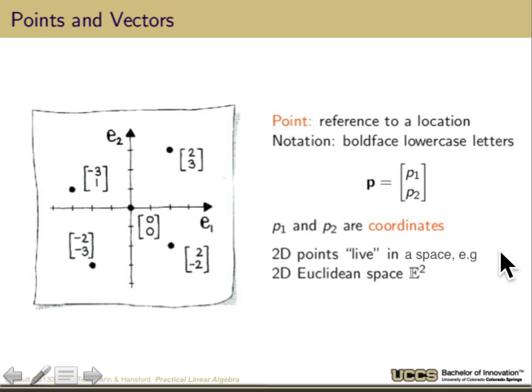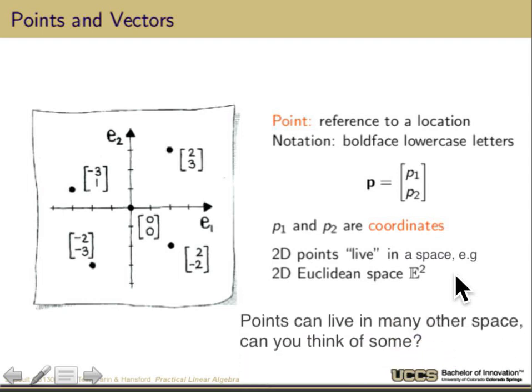2D points live in a space. For example, the 2D Euclidean space, represented as E2, is a place in which points can live. Points can live in lots of different spaces — can you think of some discrete spaces that are not continuous? Can you think of points in spaces that aren't even really numbers? We'll see how we can deal with some of those throughout this semester, but for today's lecture we're going to keep points in Euclidean space E2 just to make things easy.